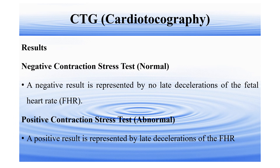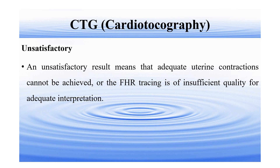The CTG results can be negative, positive, or unsatisfactory. A negative or normal result is represented by no late decelerations of the fetal heart rate, whereas a positive or abnormal result is represented by late decelerations of the fetal heart rate. If there is no late deceleration that is normal; if there is a late deceleration that is abnormal. An unsatisfactory result means there is inadequate uterine contraction, adequate uterine contraction cannot be achieved, or the fetal heart rate tracing is of insufficient quality for adequate interpretation.